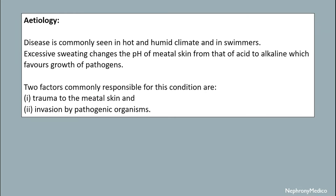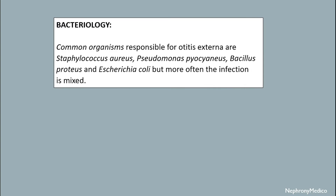The disease is commonly seen in hot and humid climates and in swimmers. Excessive sweating changes the pH of the meatal skin from acidic to alkaline, which favors the growth of pathogens. The two factors commonly responsible for this condition are trauma to the meatal skin and invasion by pathogenic organisms. Bacteriology includes Staphylococcus aureus, Pseudomonas aeruginosa, Bacillus proteus, and E. coli, but more often the infection is mixed.